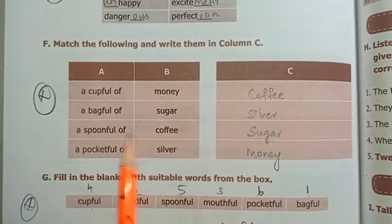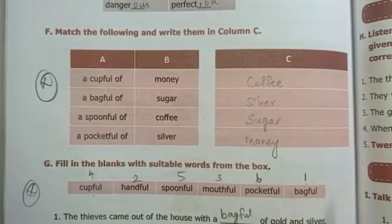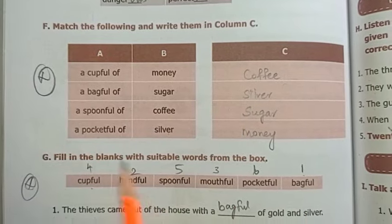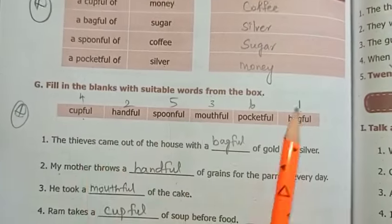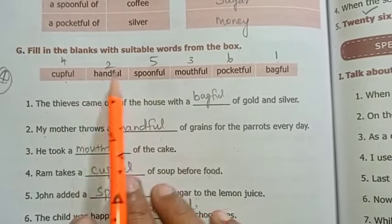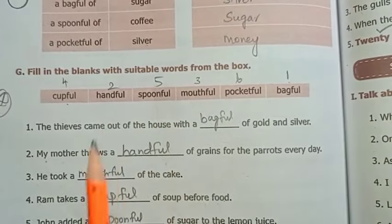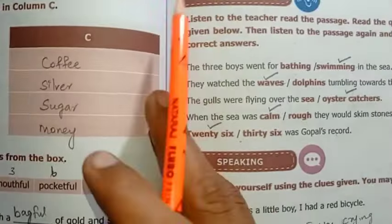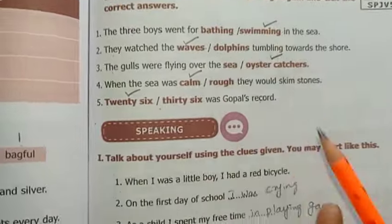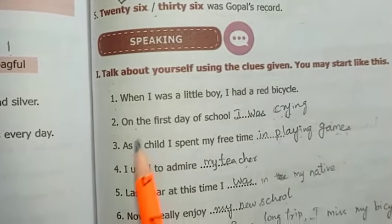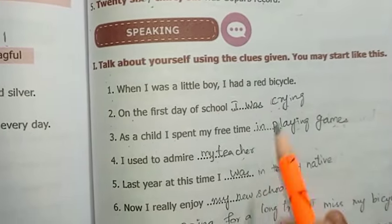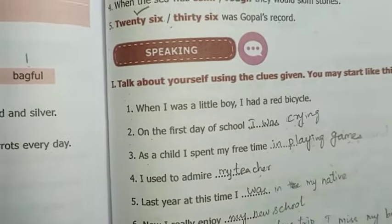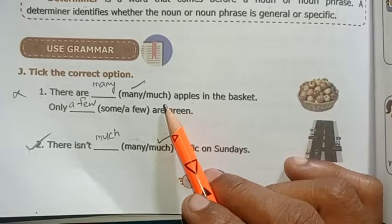Next, you will find one-mark questions for Term 1. That includes prefix and suffix. We will match the column — cup full of coffee. This exercise will be done. Next, suitable words will be done. Fill in the blanks will be done.